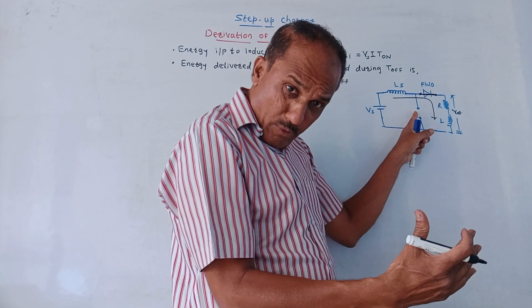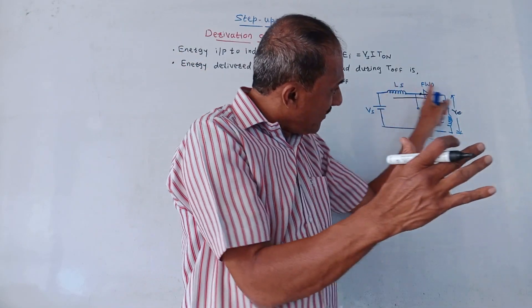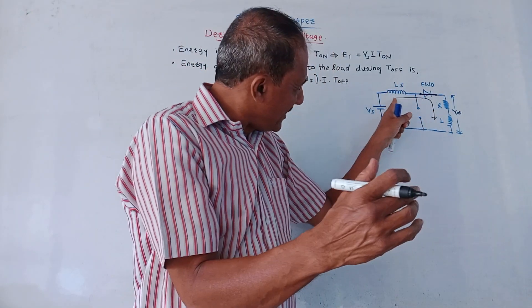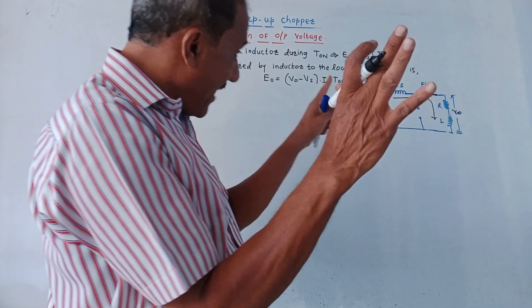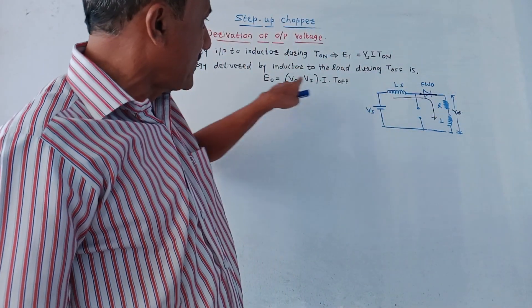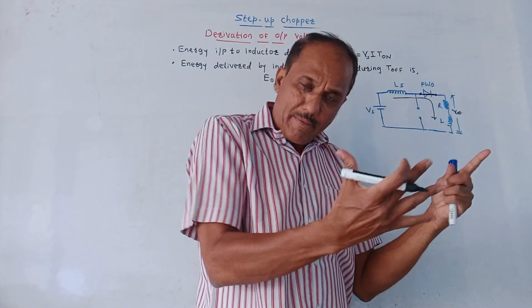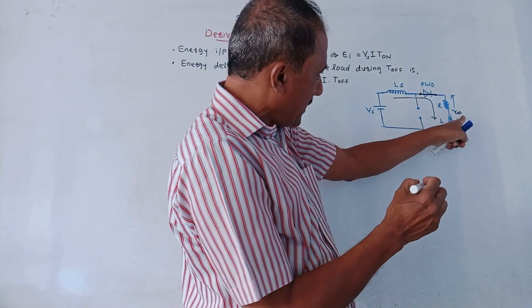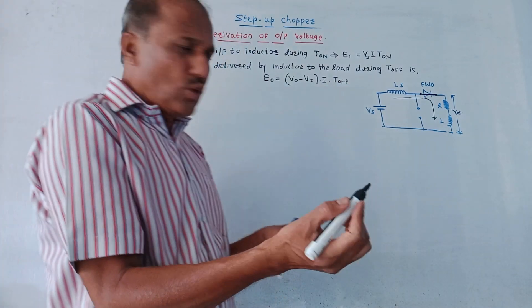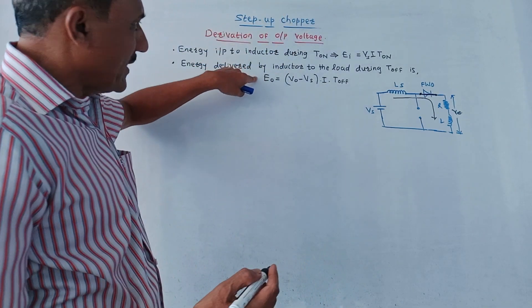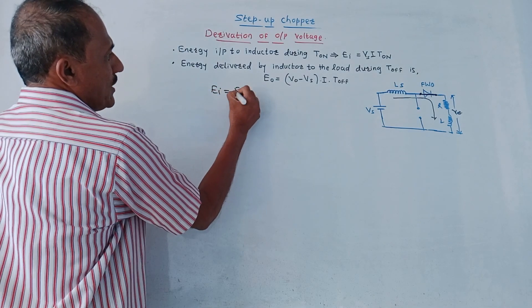In the second interval, when the switch is opened, the energy is delivered to the load by the inductor. The available voltage in this case is V0 minus Vs, because the stored energy in the inductor is being delivered to the load. So the output energy E0 equals (V0 minus Vs) multiplied by current i multiplied by T_off. In ideal conditions with no losses, input energy equals output energy: Ei = E0.